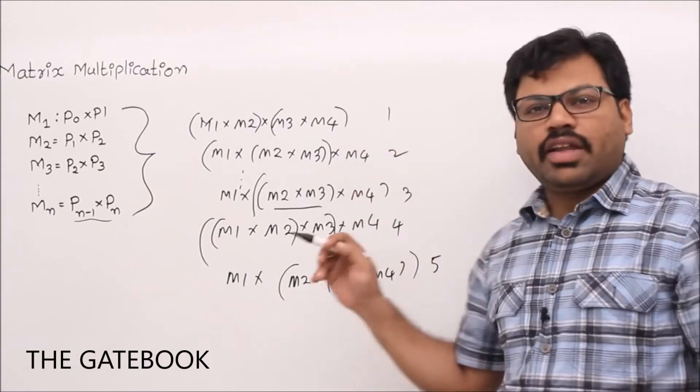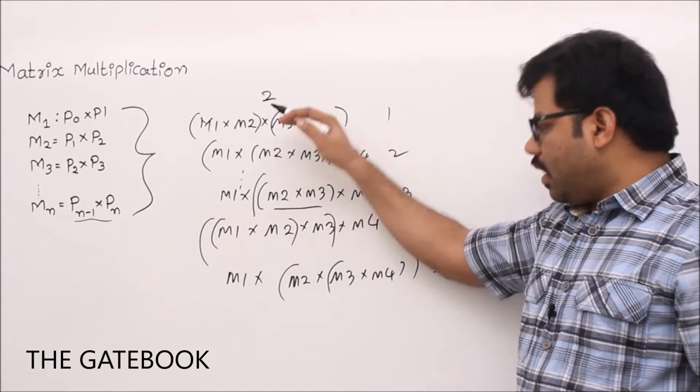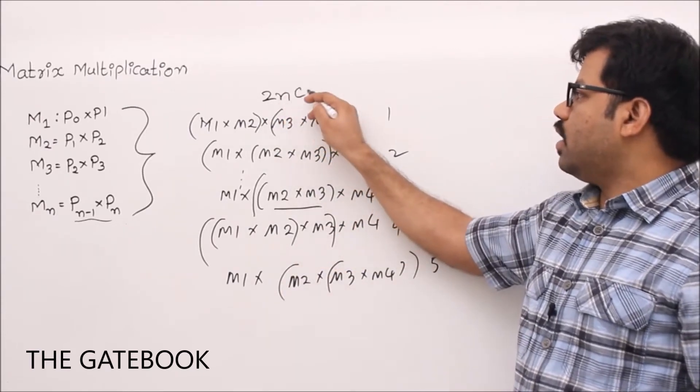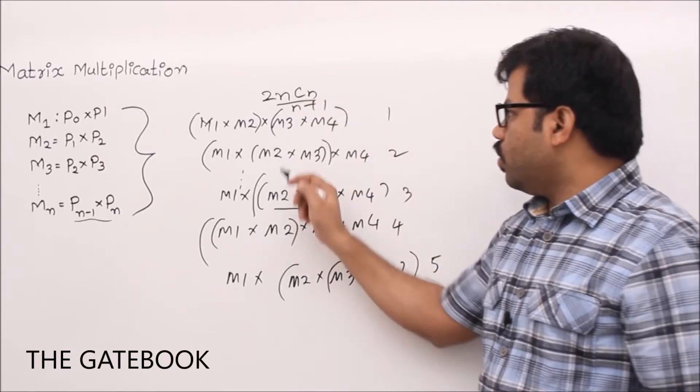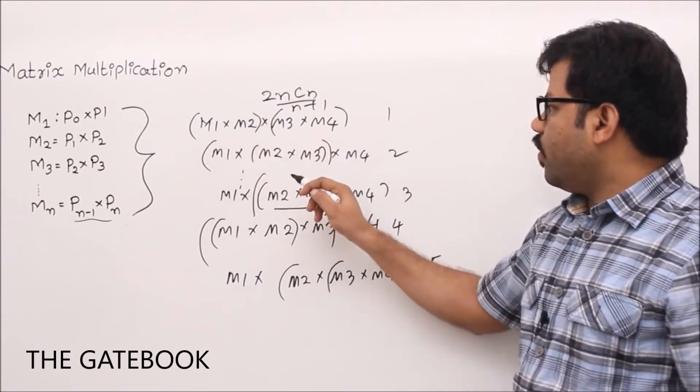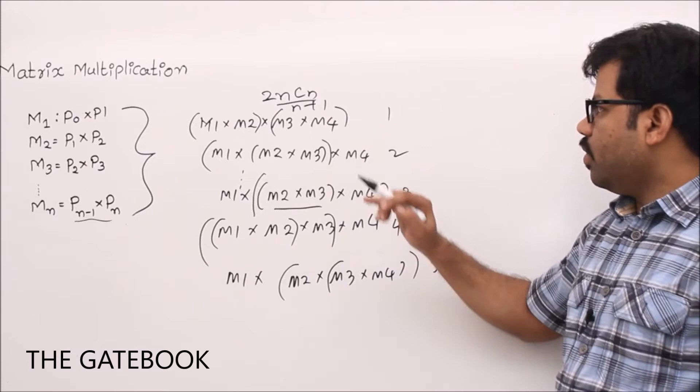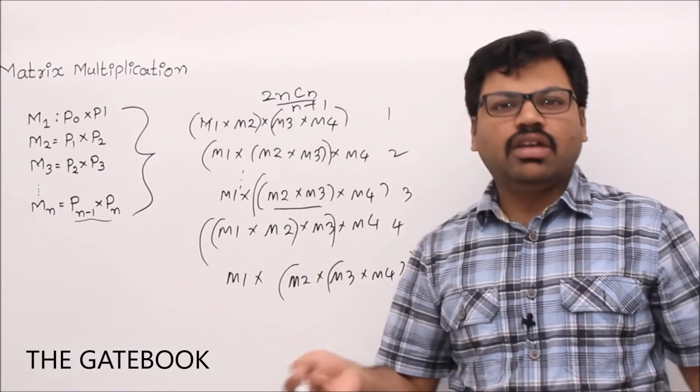This number is not easy. It is exactly equal to Catalan number. The number of parenthesizations possible for n matrices is 2nCn/(n+1). If I substitute n value, number of parenthesis you are using - if you see how many sets, one set, two sets, right? Everywhere, yes. So using two sets we are parenthesizing them.